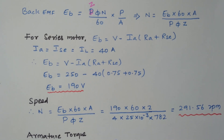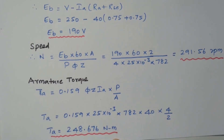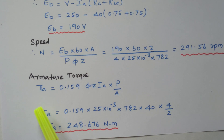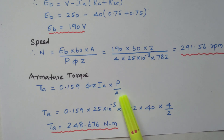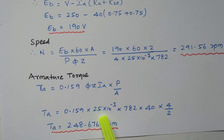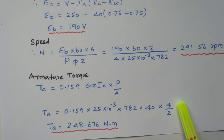Now we calculate the armature torque, which is the gross torque developed in the DC motor. The formula is: Ta = 0.159 × φ × Z × IA × (P / A). Substituting the values: Ta = 0.159 × 25 × 10⁻³ × 782 × 40 × (4 / 2). By simplifying, the gross torque developed is 248.678 newton meter.